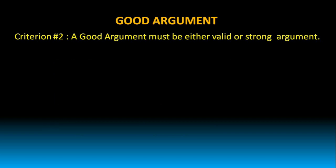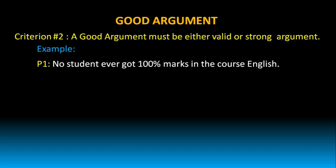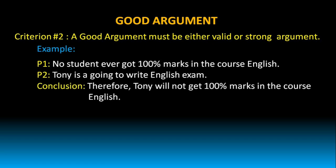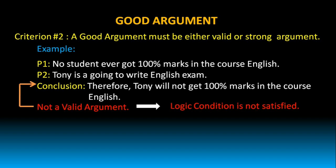Let's look at one more example. No student ever got 100% marks in the course English. Tony is going to write the English exam. Therefore, Tony will not get 100% marks in the course English. This argument is also not a valid argument because the logic condition is not satisfied. The conclusion cannot be inferred from the given two premises. Premise 1 says no student ever got 100% marks in the course English, but from this premise we cannot conclude that Tony will not get 100% marks.